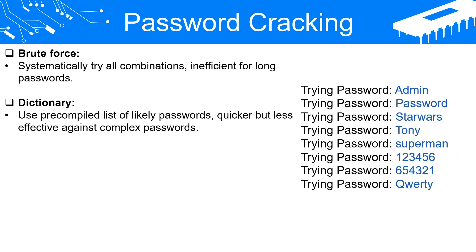Dictionary Attacks. Unlike a brute force attack, a dictionary attack takes advantage of users' tendency to use real words or common phrases as passwords. In this approach, the attacker uses a pre-compiled list of likely passwords, often referred to as a dictionary. This list might include common passwords, actual dictionary words, phrases, or other commonly used password components. Each entry in the dictionary is hashed, and the result is compared to the target hash. If a match is found, the password has been cracked. The advantage of this method over brute force is that it's quicker and more efficient because it exploits known patterns in user behavior. However, it's less effective against strong, complex passwords that do not rely on common words or phrases.